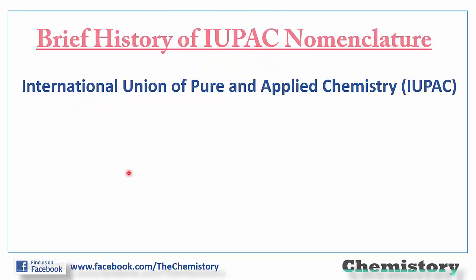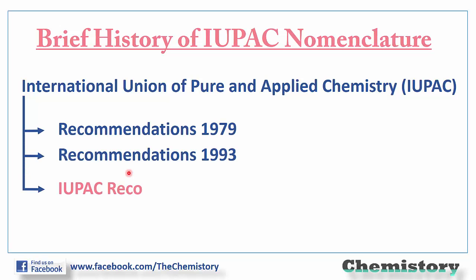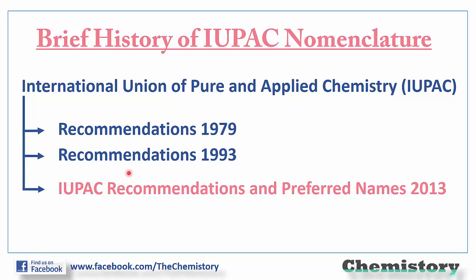International Union of Pure and Applied Chemistry is an association that was established by scientists from around the world in the year 1919. Among many other functions, IUPAC also provides various recommendations from time to time to name chemical compounds in a unique manner. For the nomenclature of organic compounds, the latest recommendation was released by IUPAC in 2013.